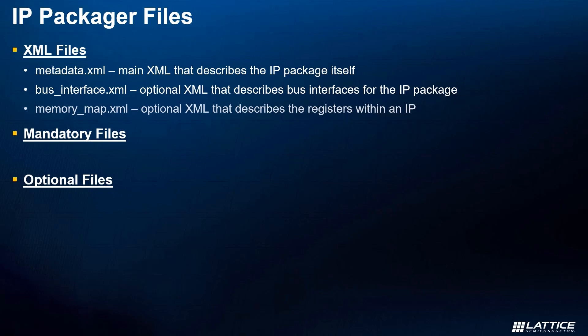Next up is bus_interface.xml, which describes the bus interface port mappings in an IP, as well as memory_map.xml, which describes the register contents of an addressable memory-mapped component. Both of these XML types are specific to embedded IP in the Lattice Propel tool flow, and are not required for a Radiant IP. The only mandatory file — and actually the most important file that must be created for every IP package — is the RTL for the IP package itself.